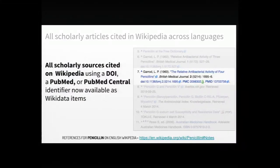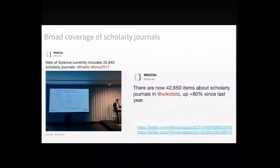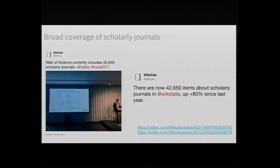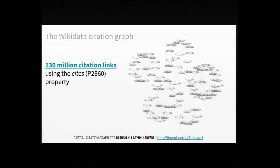The original use case for Wikisight was to serve Wikipedia across languages. As of today, we have all scholarly articles cited with identifiers across 300 language editions in Wikipedia, all represented as items in Wikidata, whether they use a DOI or an identifier from PubMed or PubMed Central. We have pretty broad coverage of scholarly journals — the Web of Science core collection includes roughly 32,000 scholarly journals, and we currently have 42,000 journal entries in Wikidata. Since citations tend to be public domain data, we also started ingesting the citation graph, and we currently have 130 million citation links connecting items that cite each other.